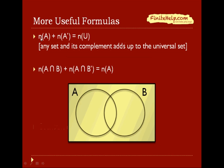Here are more useful formulas. The number of elements in A plus the number of elements in A prime is the number of elements in the universal set. So that's just simply any set and its complement will add up to the universal set.